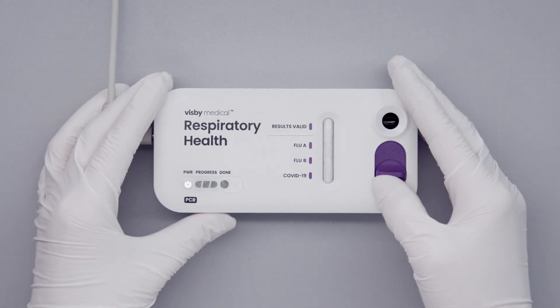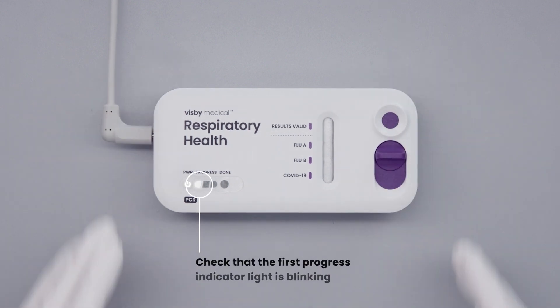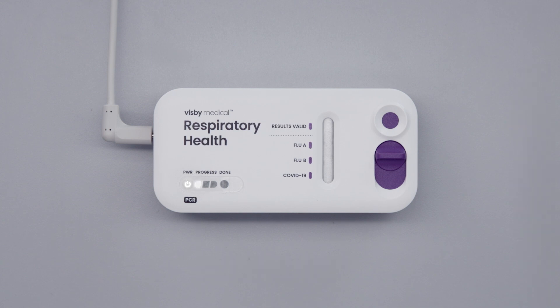Slide the switch closed to start the test. Check that the first progress indicator light is blinking. Progress indicator lights will initially blink and then become stable as the test progresses. Do not move the device while the test is running.